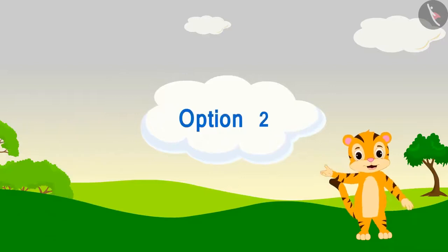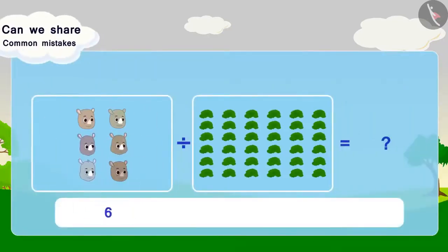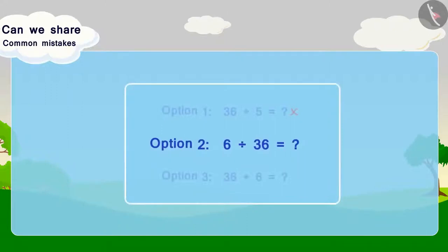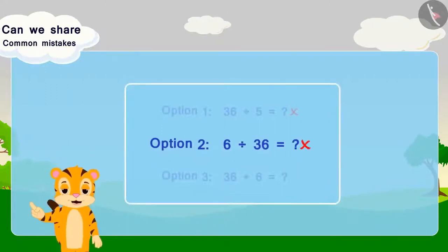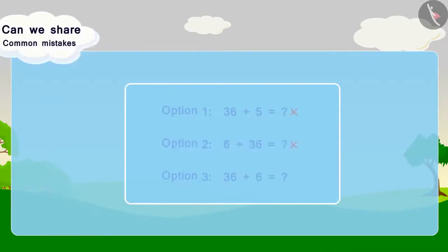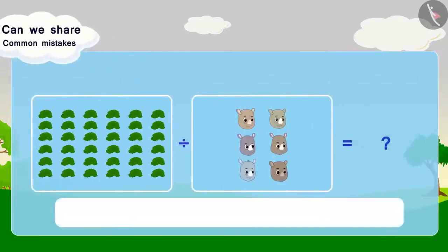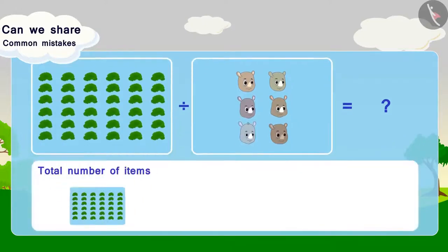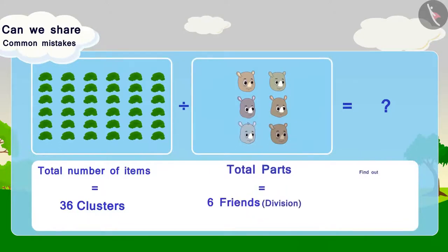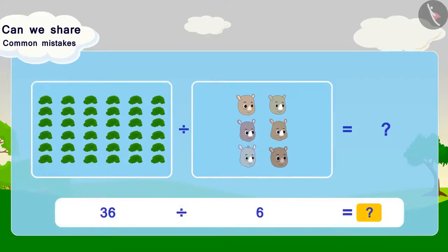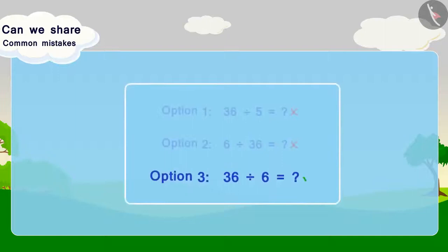Option 2 divides 6 friends into 36 grass clusters, which reverses the numbers — this is wrong. So Option 2 is also incorrect. Option 3 can be written as: 36 clusters divided among 6 friends equals how many clusters per friend? In this option we have correctly divided 36 clusters among 6 friends, so Option 3 is the right answer.